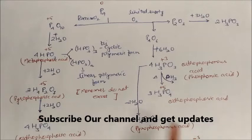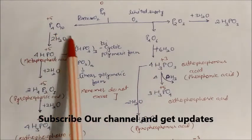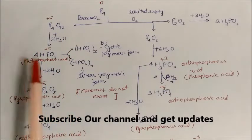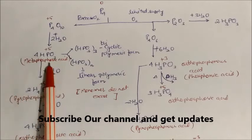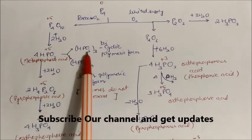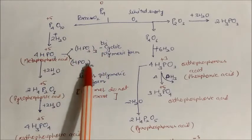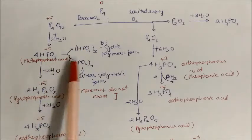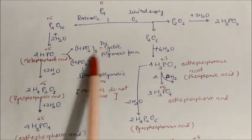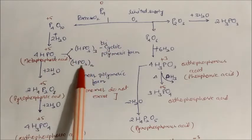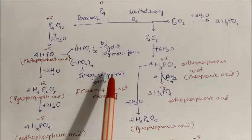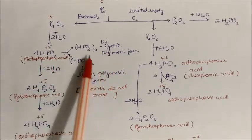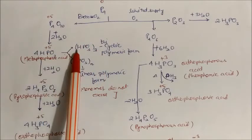On the other side, P₄O₁₀ with two molecules of water gives metaphosphoric acid, where the oxidation state is plus five. Metaphosphoric acid exists in two forms: (HPO₃)₃ forms a tricyclic polymeric structure, while (HPO₃)ₙ takes a linear polymeric form. The cyclic structure is tricyclic and the linear structure is the polymeric form.